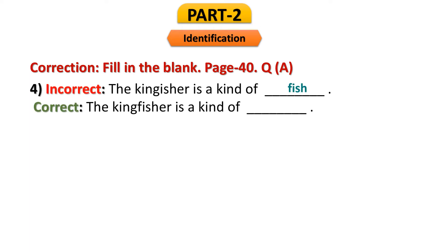Before starting, I would like to share that I made a mistake in the last class. On page 40, part A, question number 4, the fill in the blank answer was given as 'fish' — but the correct answer is 'bird'. Kingfisher is a bird, not a fish. Please correct it in your copy.